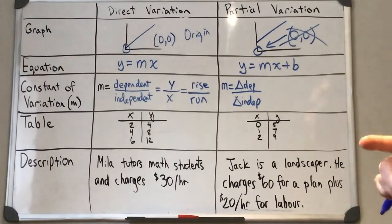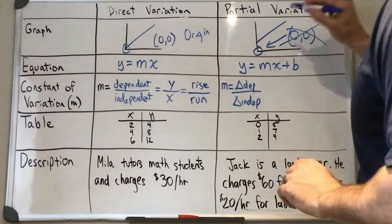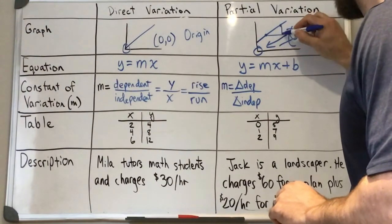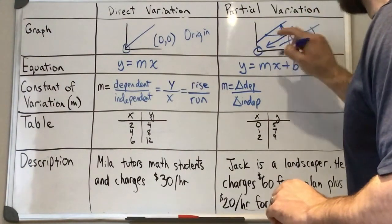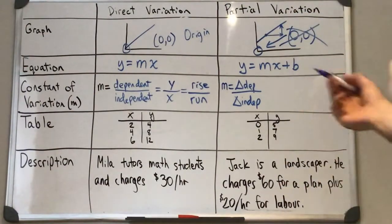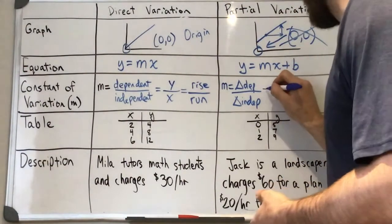So what that means is we're going to have to see from one point to another, how much has our x changed and how much has our y changed. So we're going to use a formula that will help us with that.